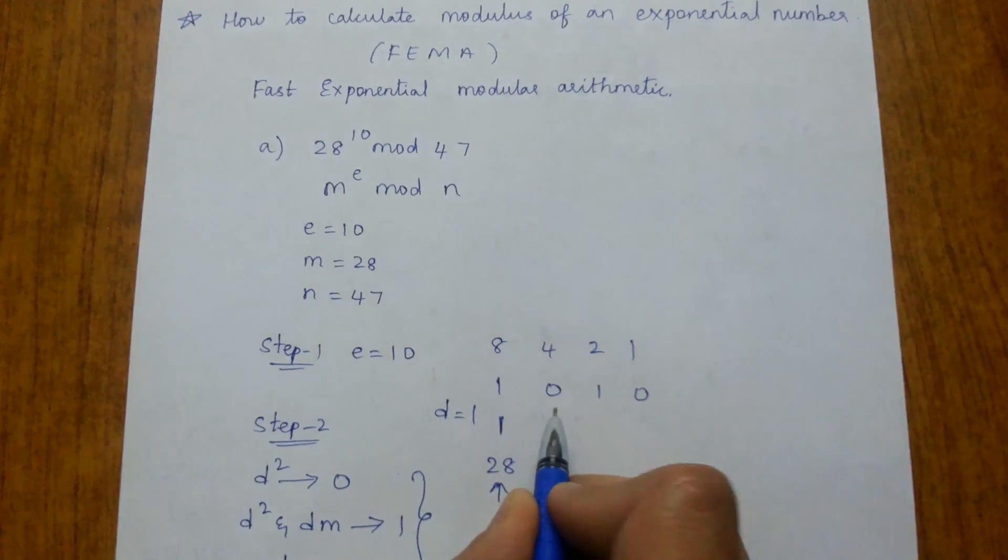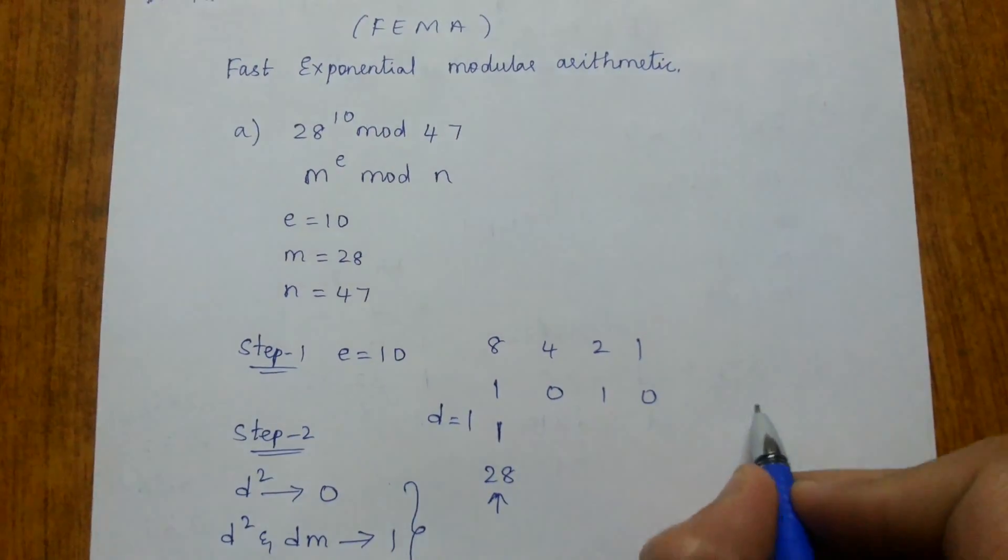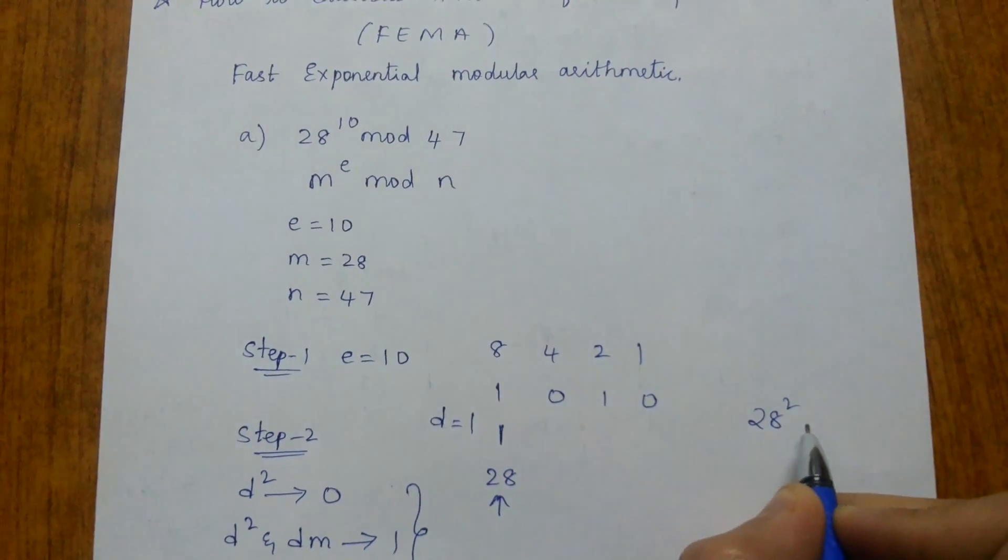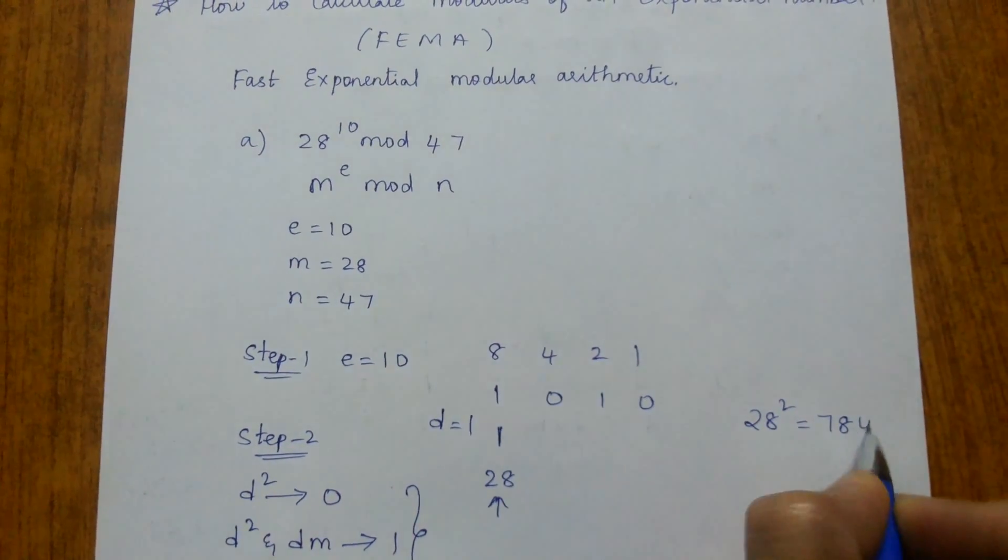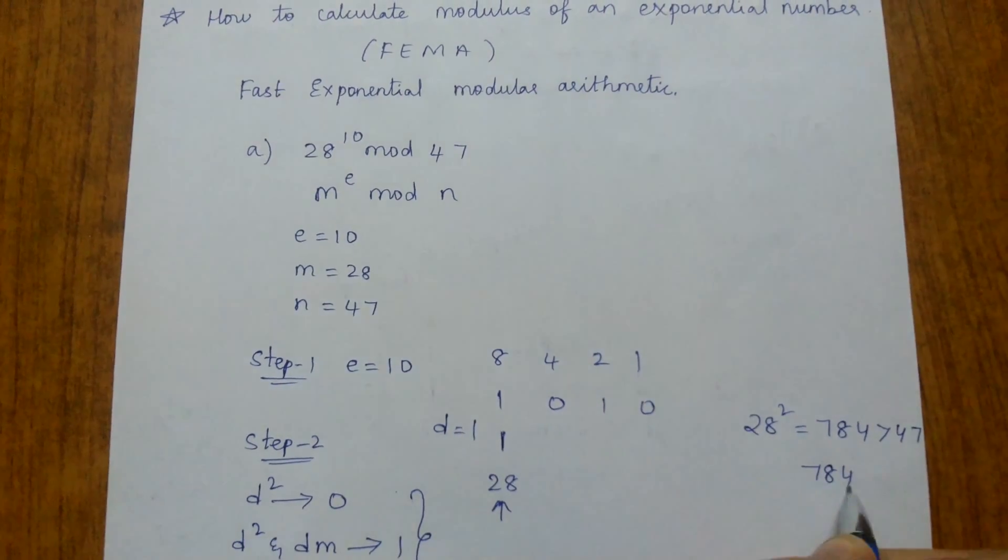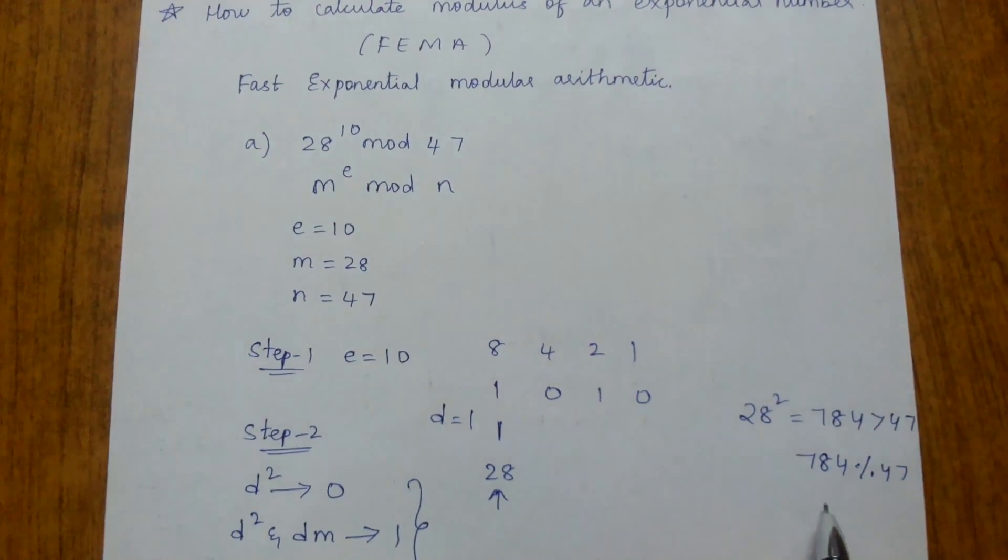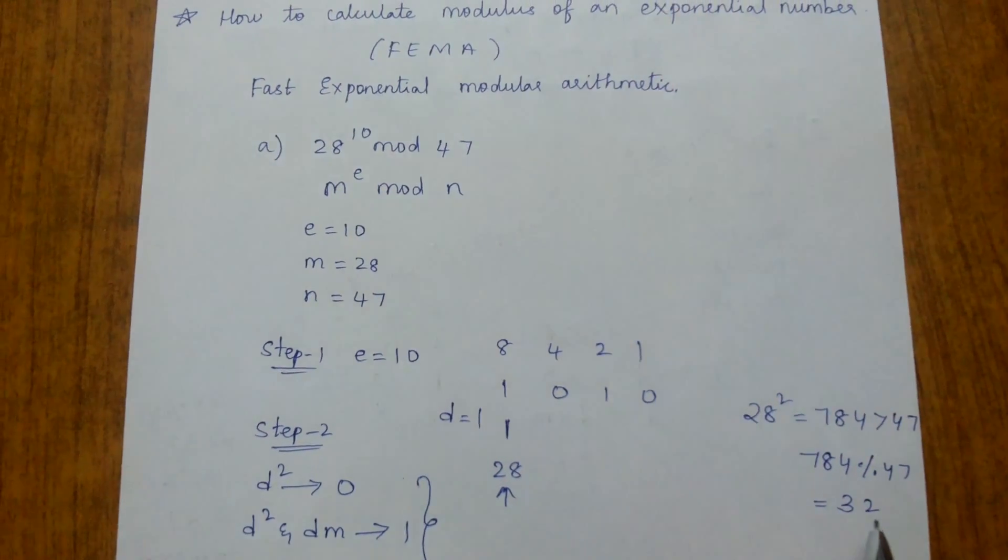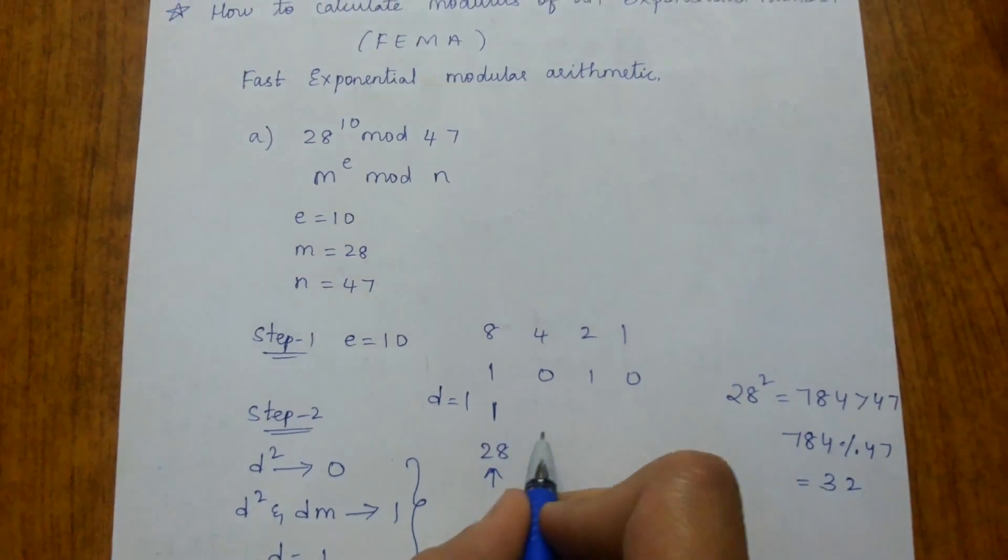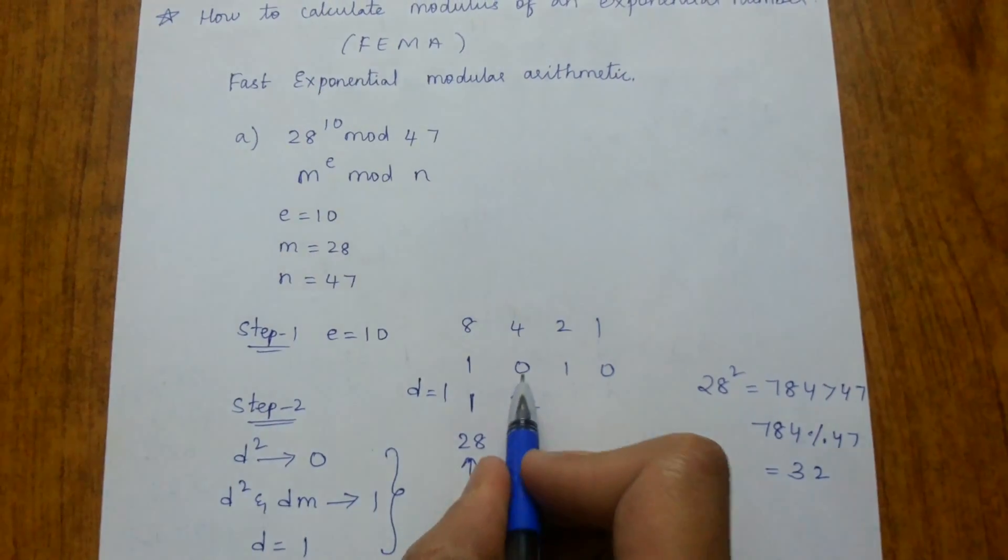Now since it is 0, we do d², that is 28². 28² is 784. We can do 784 mod 47, which I have told in my previous video, which is 32. This value is less than 47 so we keep it as 32. We don't perform d×m because it is 0.